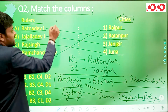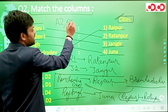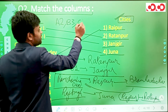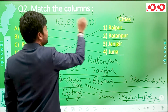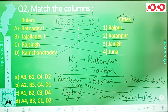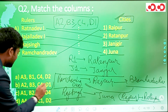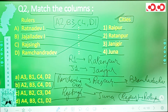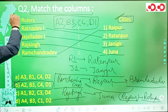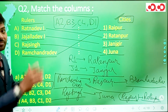So with Ratnadev we match Ratanpur, with Jajaladev we match Janjagir, with Raj Singh we match Juna, and with Ramchandadev we match Raipur. The pairs are A2, B3, C4, and D1 — option B is the correct option for question 2.